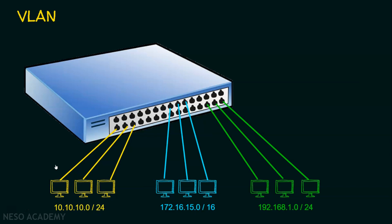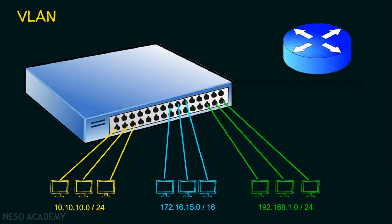You may ask: all these devices are connected to the same switch, so can a device in one VLAN communicate with a device in another VLAN? It is not possible directly, because they have different IP addressing schemes and belong to different networks. So we need a router. I am bringing in a router and connecting it to one of the freely available ports. This port carries the traffic of all VLANs, and that is why we call it the trunk port. This trunk line carries the traffic of the yellow, blue, and green VLANs.